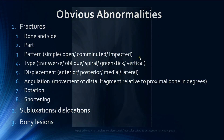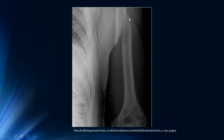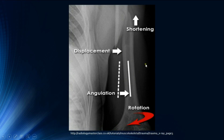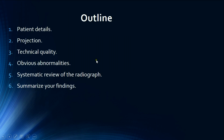Here is a quick summary for describing obvious abnormalities. This is a fracture of the left humerus with the fracture in the mid-shaft. It is an oblique fracture, and the distal fragment is laterally displaced with valgus angulation, internal rotation, and shortening of the bone. You can clearly see the lateral displacement, the outward angulation indicating valgus, the rotation, and the shortening as the distal fragment is pulled proximally.